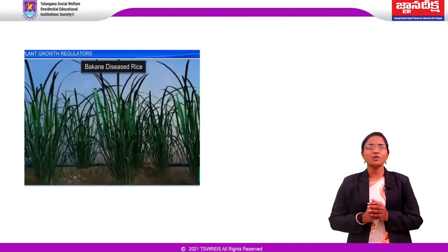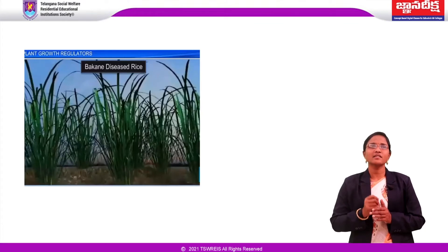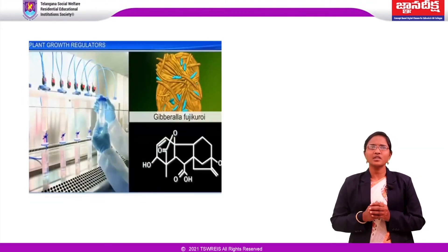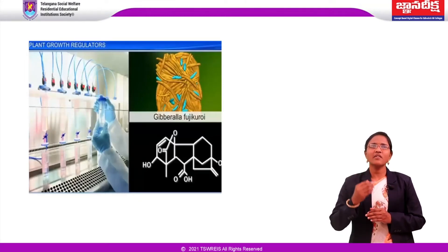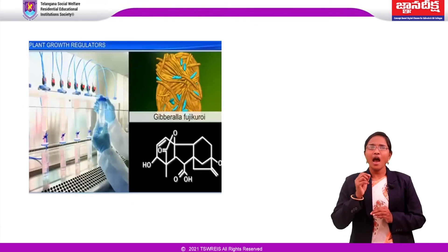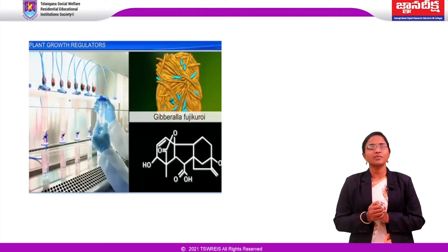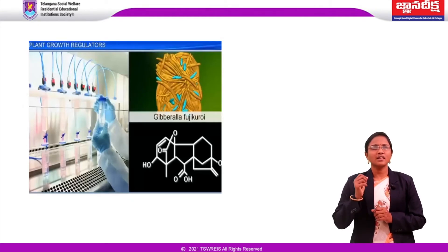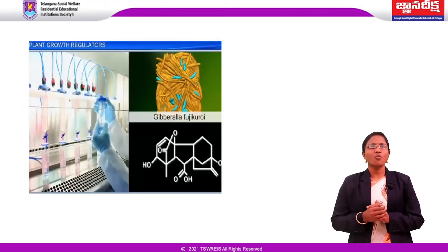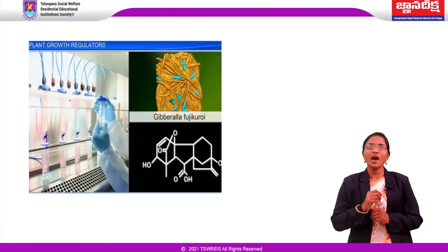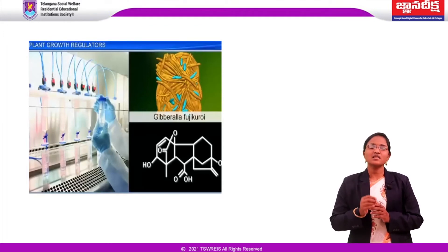The bakanae disease, also called foolish seedling disease in rice, is caused by the fungal pathogen Gibberella fujikuroi. Kurosawa reported the appearance of symptoms of the disease in uninfected rice seedlings when they were treated with sterile filtrate of the fungus. Later it was identified as gibberellic acid. Skoog and Miller identified and crystallized the cytokinesis-promoting active substance they termed kinetin. Cousins confirmed that a volatile substance released from ripened oranges hastened the ripening of stored unripened bananas; this substance was identified as ethylene, a gaseous plant growth hormone.